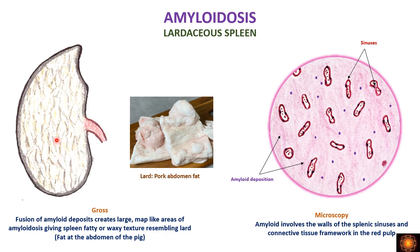The other type is the laudaceous spleen, where amyloid deposits are present in between the sinusoids. The fusion of these deposits creates large map-like areas. Grossly the cut section of the spleen is waxy and fatty, resembling lard — the abdominal fat of pork — hence the name laudaceous spleen. Microscopically deposition is only between the sinusoids, not in the lymphoid follicles as in sago spleen. So if deposition is in the white pulp it gives sago spleen; if in the red pulp between sinusoids it gives laudaceous spleen.